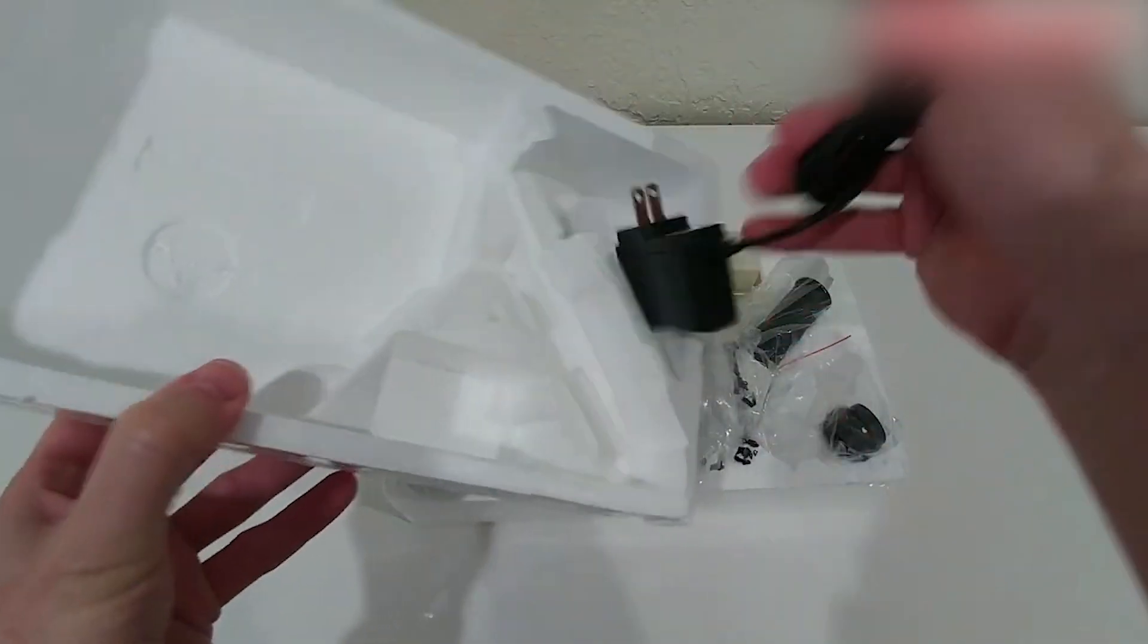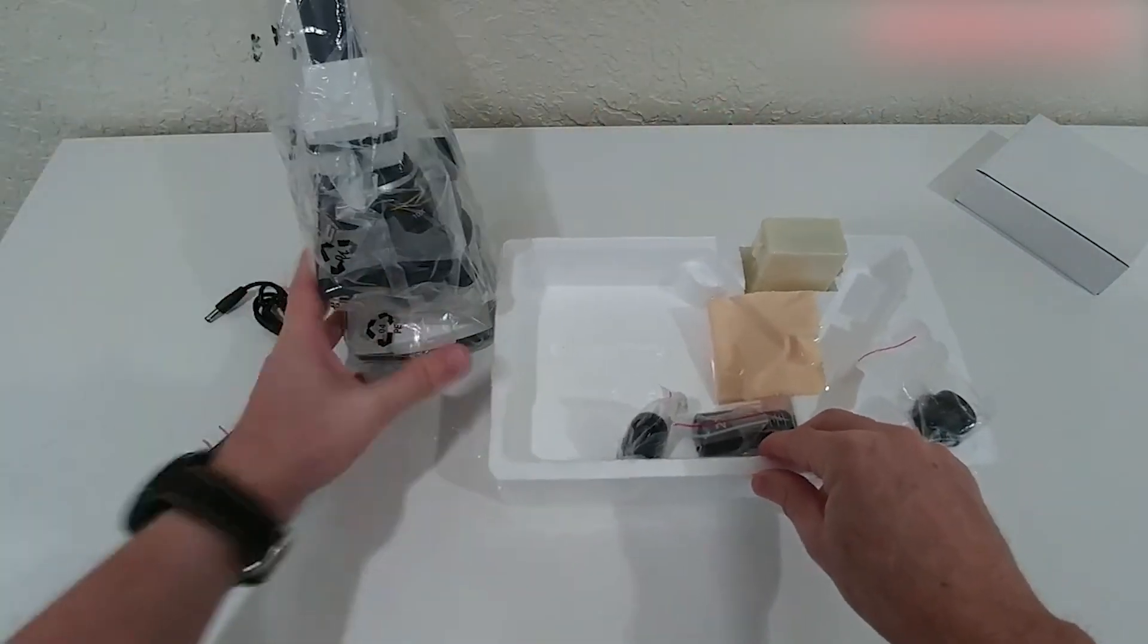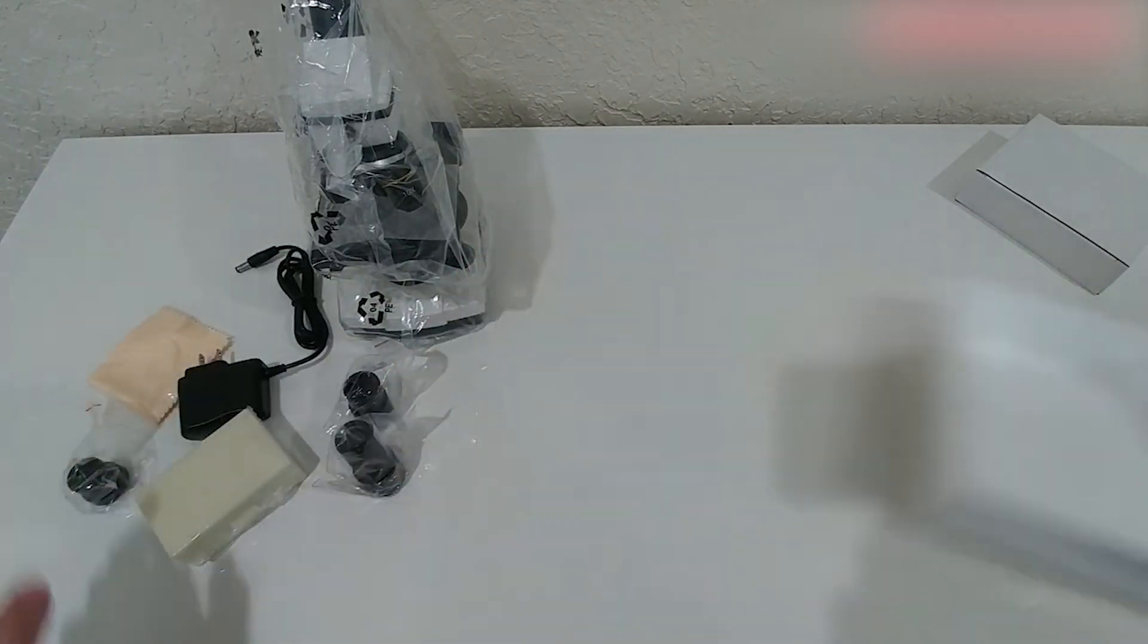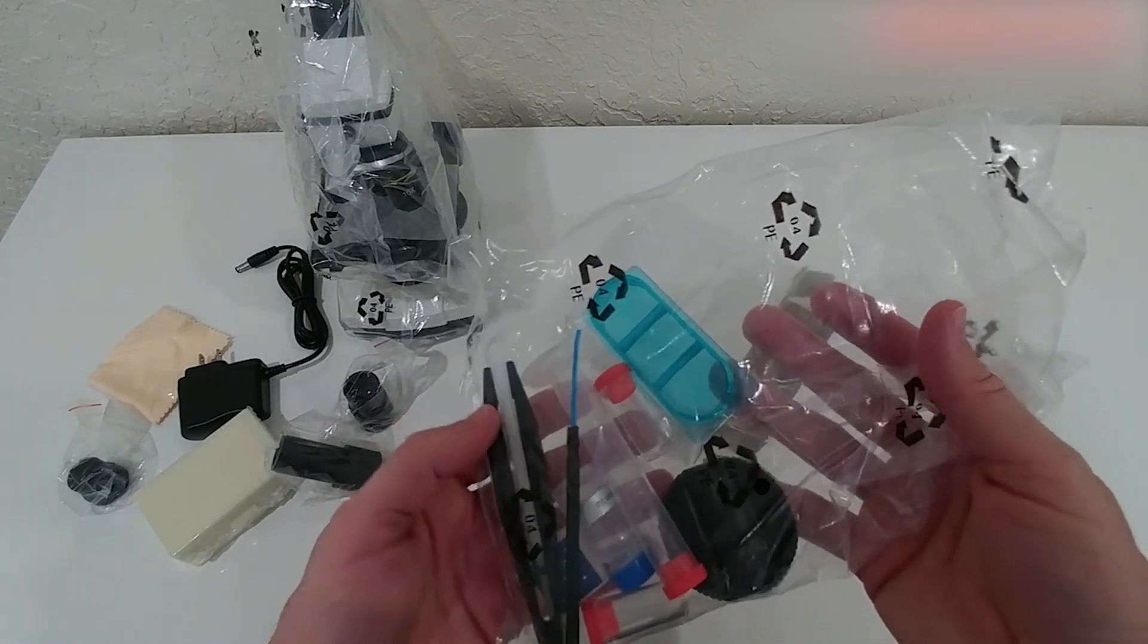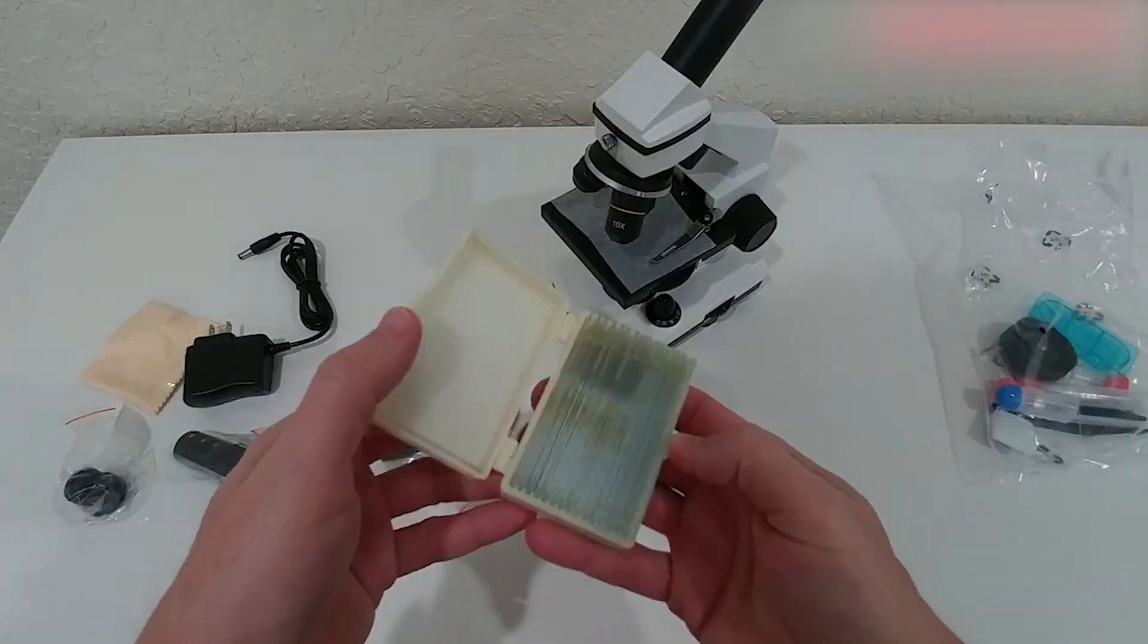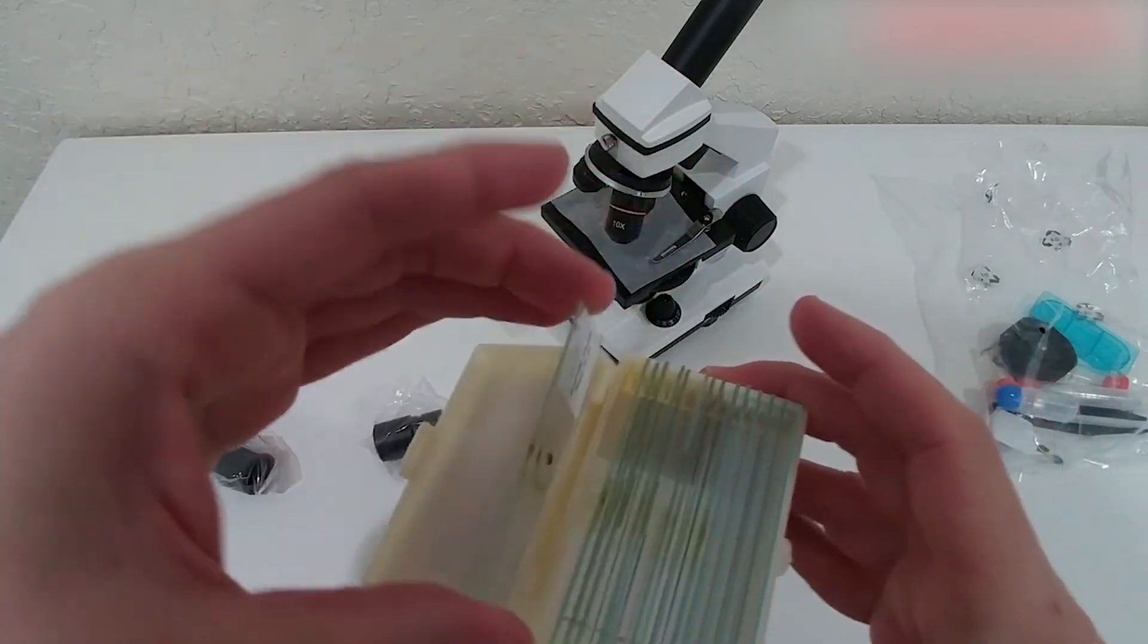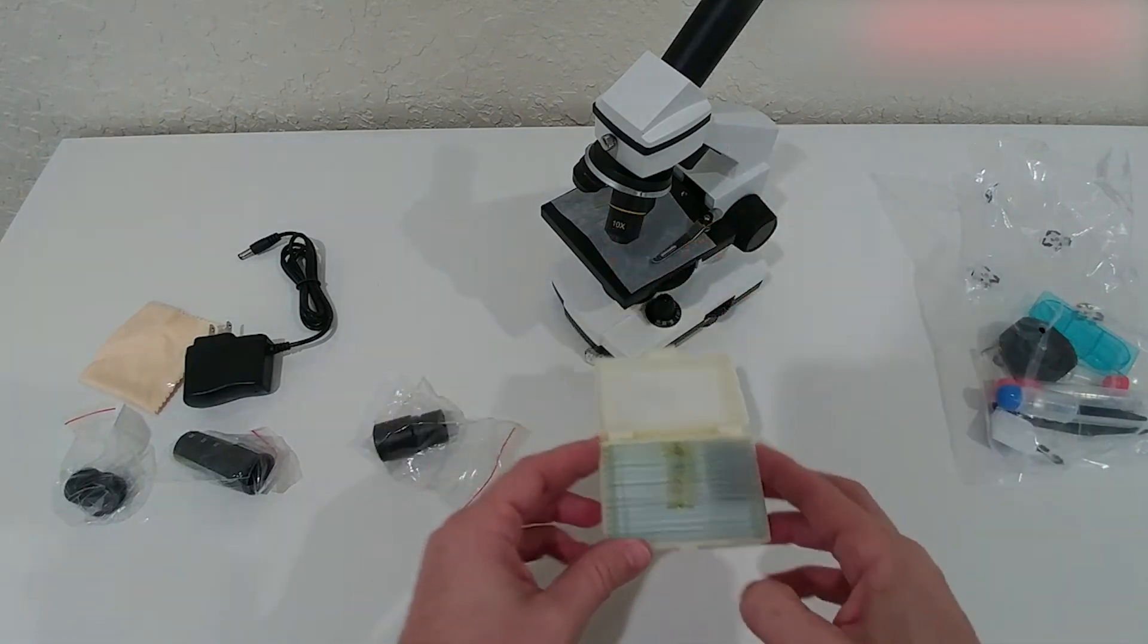One of the standout features of this monocular microscope is its sturdy design. It comes equipped with a solid metal frame that ensures durability, along with both coarse and fine focusing knobs. This thoughtful design allows you to make fine adjustments easily, providing you with precise control over the focus. As a result, you'll achieve sharper, clearer images every time you look through the lens. Whether you're observing a tiny insect wing or the intricate structure of a leaf, you can trust this microscope to help you zoom in on those fascinating microscopic details with confidence.